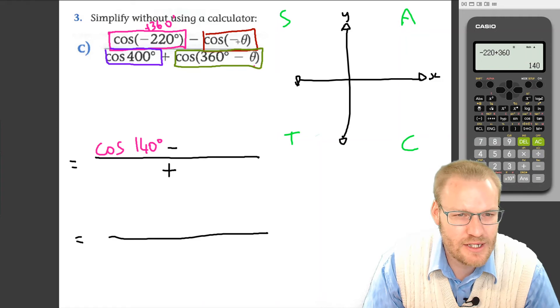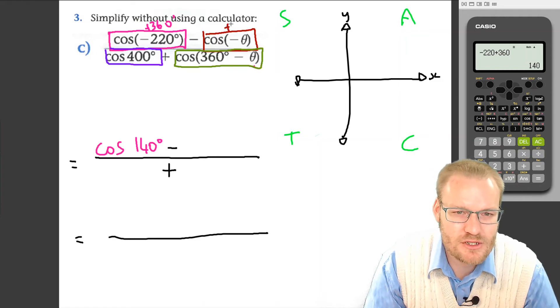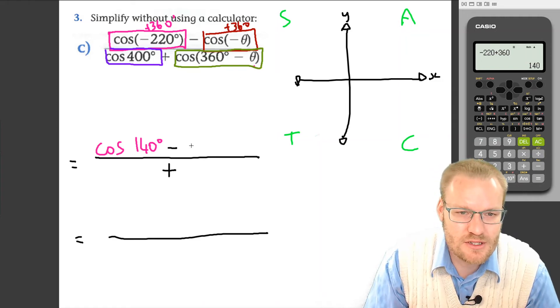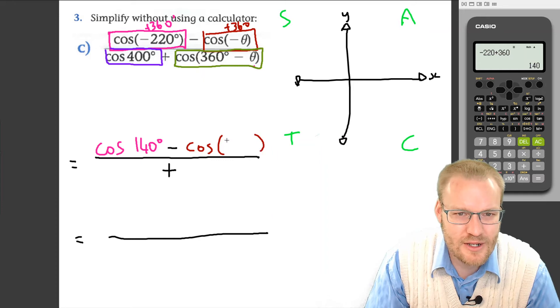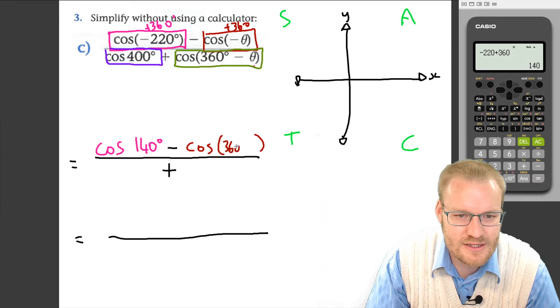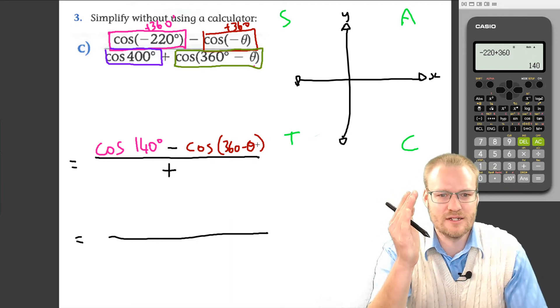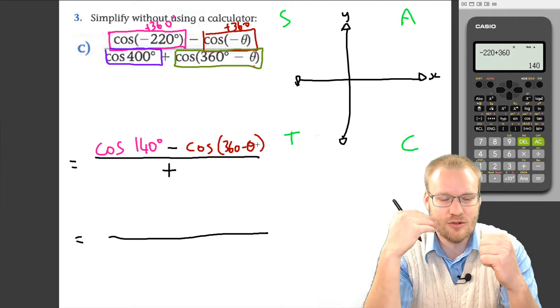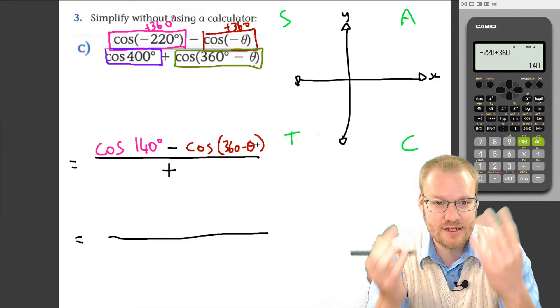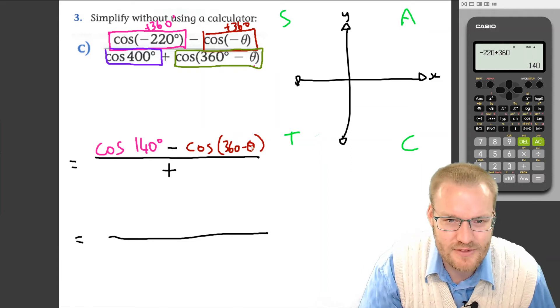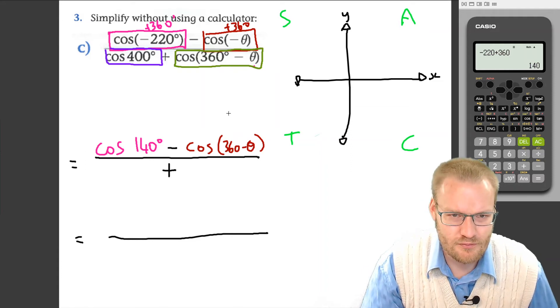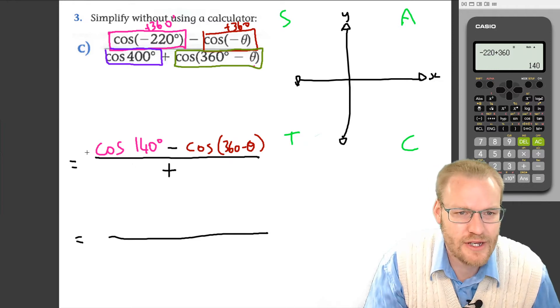A negative angle—what do we do? We just add 360. So this is the same as cos(-θ + 360), or I'm just going to write it as cos(360° - θ), because it doesn't matter if you go minus theta plus 360 or plus 360 minus theta. But this now looks like something we've done before, similar to the bottom part.